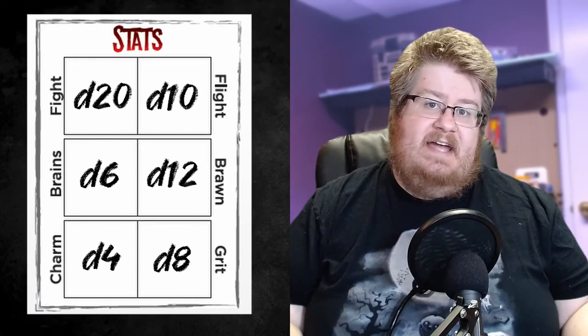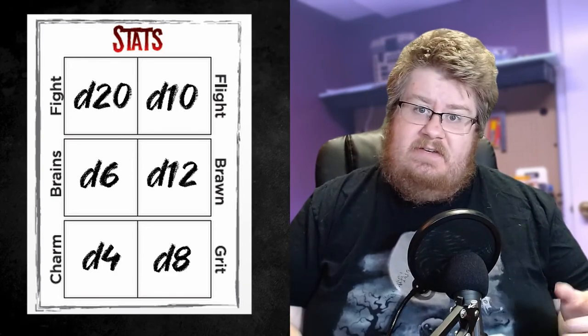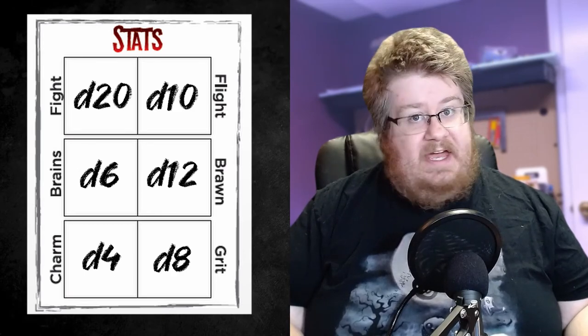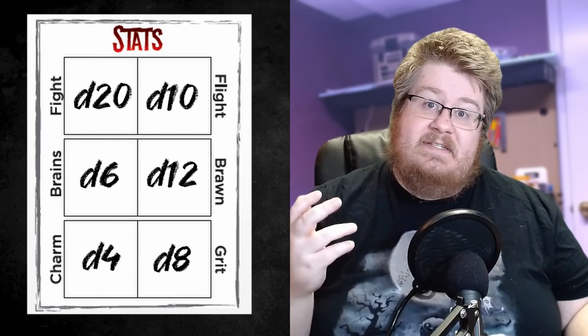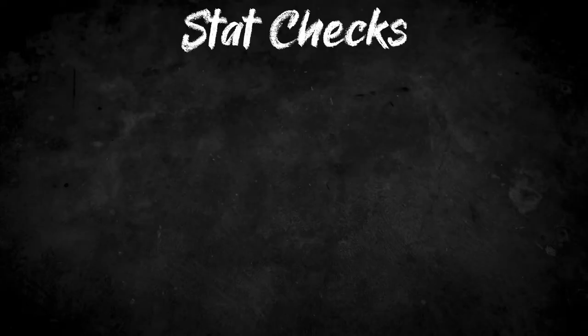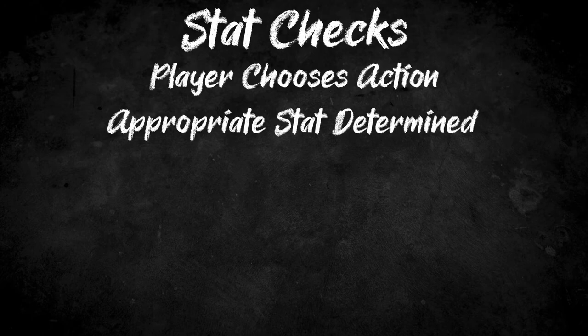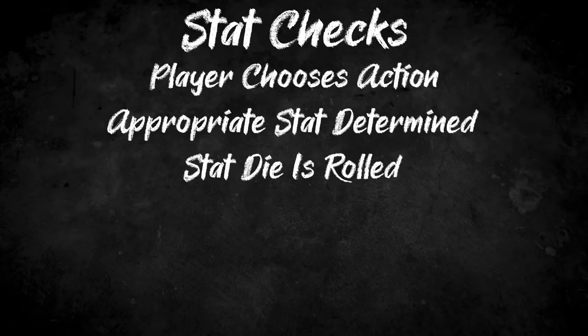Going back to character creation, you'll remember that there are six stats. Into each one of these stats, you assigned one of the six standard dice — that's the D4, D6, D8, D10, D12, and D20. These stats and their associated die form the basis of this game's mechanics. Whenever a player would like to accomplish something, they will state what they want to do and you, the game master, will determine which attribute their action fits under.